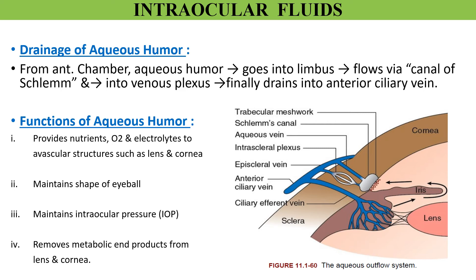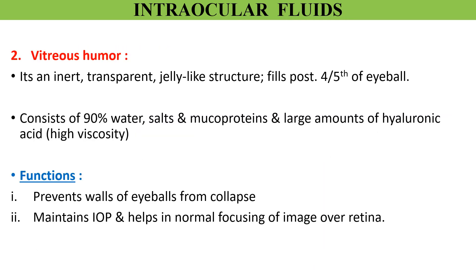The functions of aqueous humor are: it provides nutrients, oxygen, and electrolytes to the cornea and lens, as these two structures do not have any blood supply. It maintains the shape of the eyeball and the intraocular pressure; the normal intraocular pressure is between 12 to 20 millimeters of mercury. Aqueous humor also removes metabolic waste from the lens and cornea.